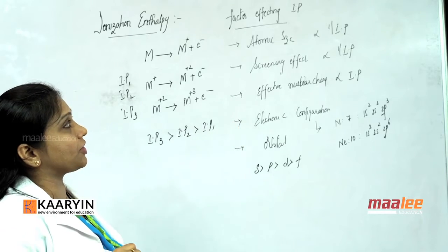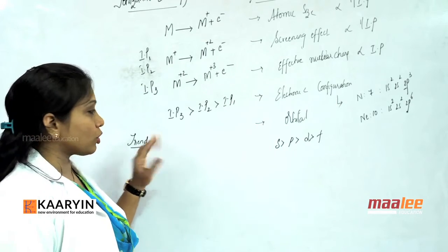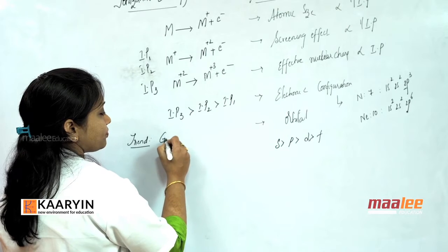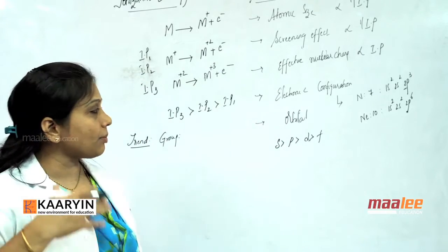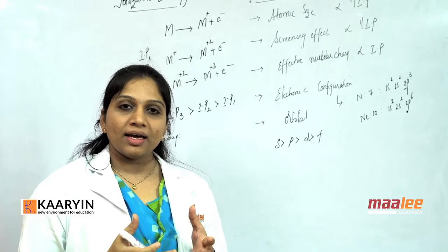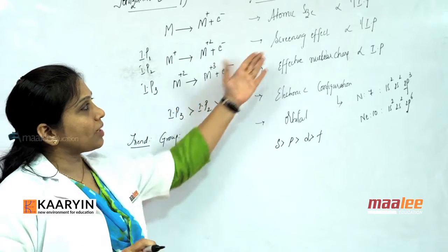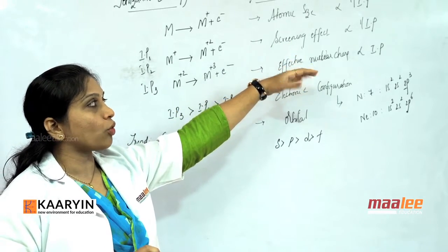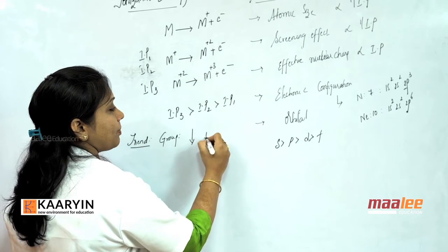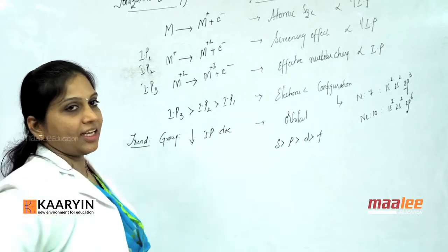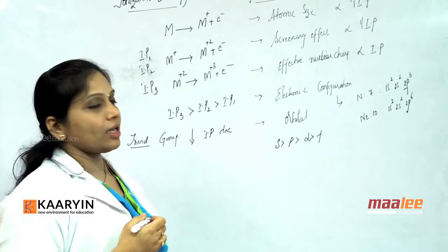Now let us see the trend of ionization potential along a group and along a period. In a group, as atomic number increases, atomic size increases, and the incoming electron goes into the next orbit. The screening effect increases — repulsions between inner and outer electrons work well. Since screening effect is more, IP values decrease. So in a group going from top to bottom, IP values decrease.